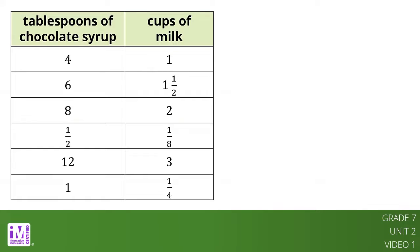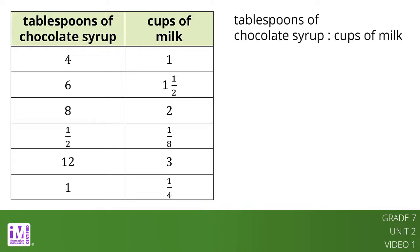Here is a table that shows different amounts of chocolate syrup and milk. When mixed together, each row of the table would make a different amount of chocolate milk. However, each row of the table makes a mixture that would taste the same. Notice that each row in the table shows a ratio of tablespoons of chocolate syrup to cups of milk that is equivalent to 4 to 1.